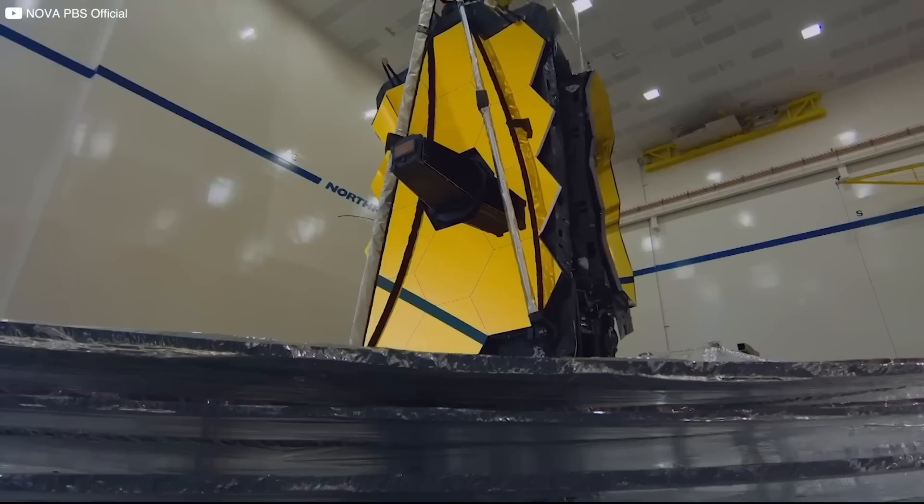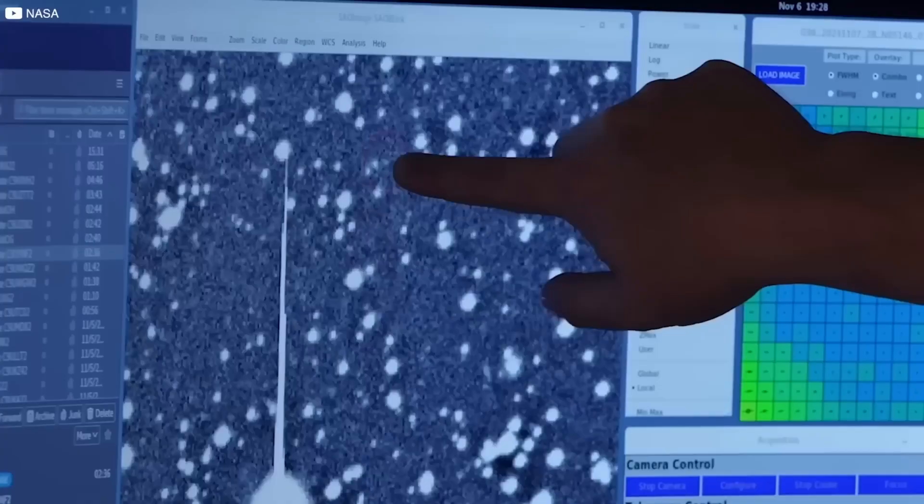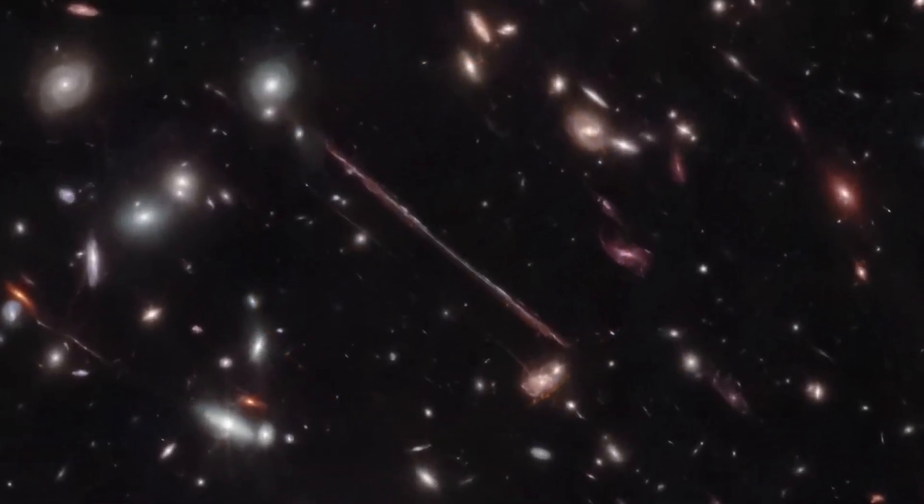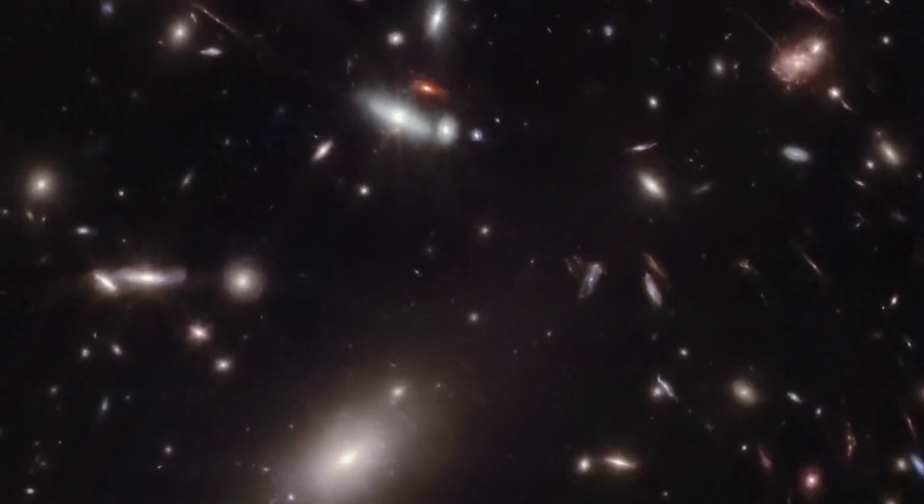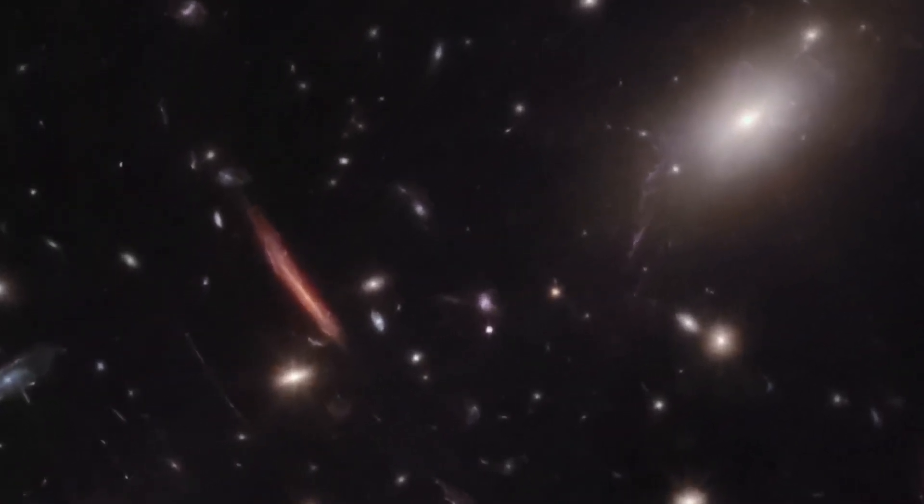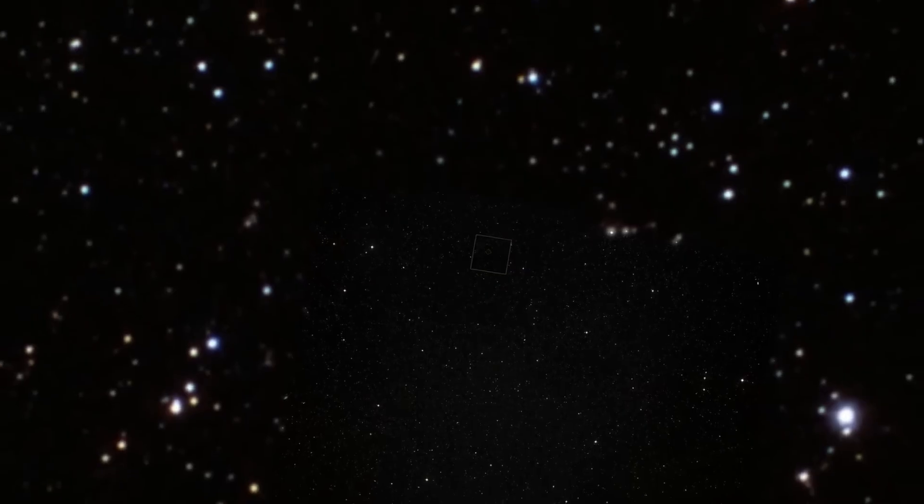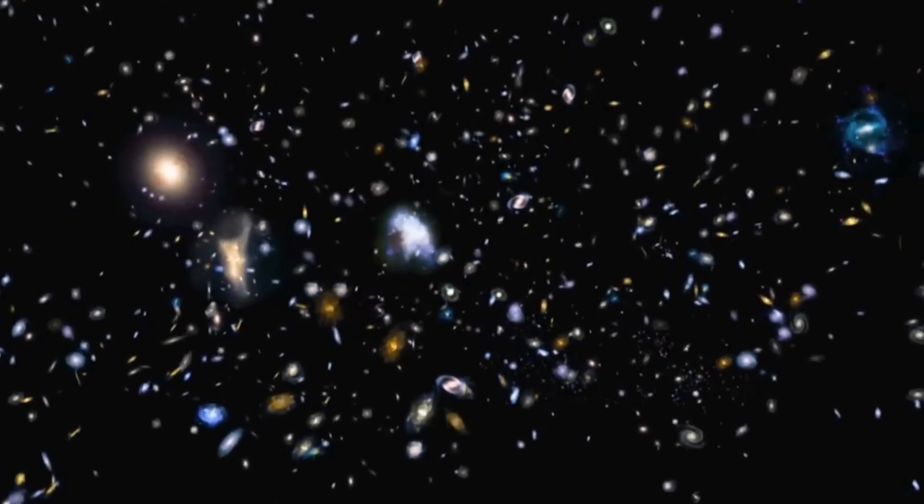When the James Webb Space Telescope first opened its mirrors to the cosmos, astronomers expected clearer images, sharper data, and a more detailed look at the early universe. What they did not expect was that Webb would begin to undermine one of the most established principles in modern cosmology.